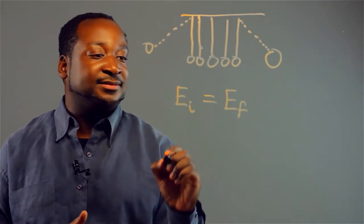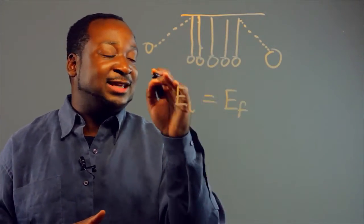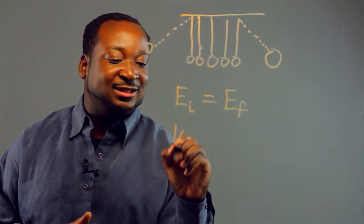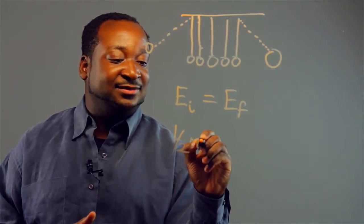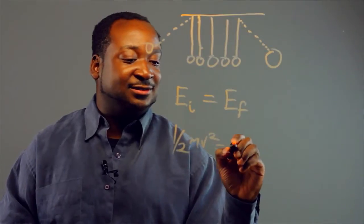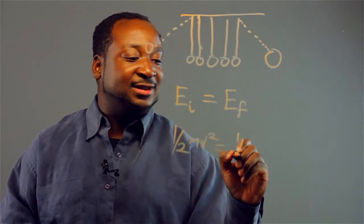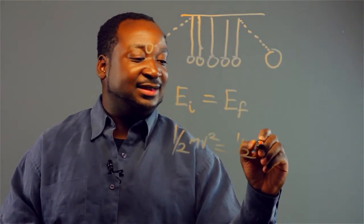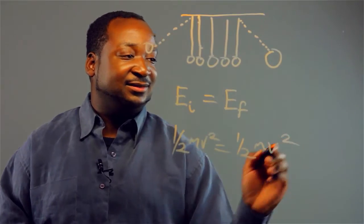So we have swinging objects, kinetic energy, that's one-half mv squared. It's going to be equivalent to one-half mv squared.